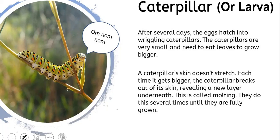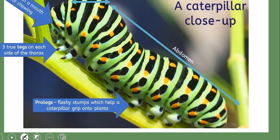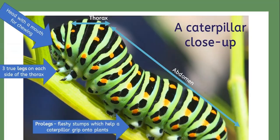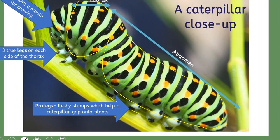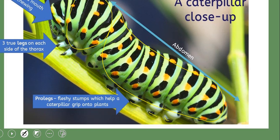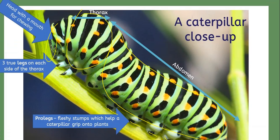Every time that the caterpillar gets bigger, they grow new skin — they get rid of their old skin and grow new skin. Here's a close-up of the caterpillar. You can see the beginning of what happens to the butterfly — the thorax is up top and the abdomen is down here. They have legs, which help them stay on plants and leaves, and they have a mouth with a head for chewing, because caterpillars chew leaves — they don't drink nectar.